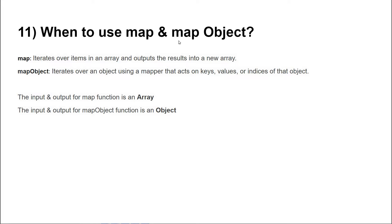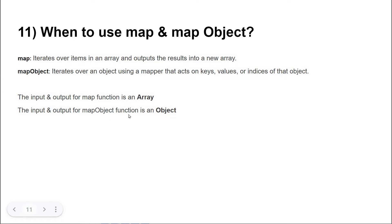The question is when to use map and mapObject. Map is a function where we use to iterate items in an array and the output will be again an array. MapObject also iterates through the items within an object, or key-value pairs within an object, and it will return an object as output. So the input and output for map function is an array, and the input and output for mapObject is an object. We will see a little bit on the same through the demo.